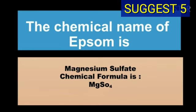The chemical name of Epsom is magnesium sulfate and chemical formula of Epsom is MgSO4.